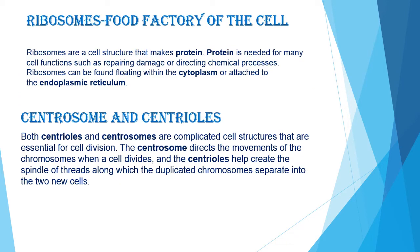We have studied about plastids, which are called the kitchen of the cell, and lysosomes, which are called the suicide bag of the cell. Now let's study about ribosomes, which are called the protein factory of the cell. Why are ribosomes called the protein factory? Because ribosomes are the cell structures that make protein, and protein is needed for many cell functions such as repairing damage or directing chemical processes. Ribosomes can be found floating within the cytoplasm or attached to the endoplasmic reticulum.